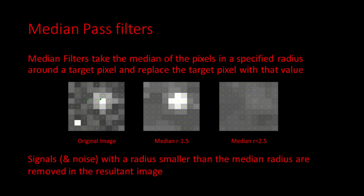The final thing we need to understand is the median filter. The median filter takes the median of the pixels in a specified radius around a target pixel and replaces the target pixel with that value. Median filters are good at reducing noise, but at the expense of losing detail. Generally, median filters will remove details smaller than the radius of the filter.